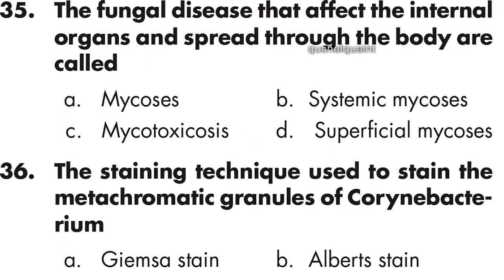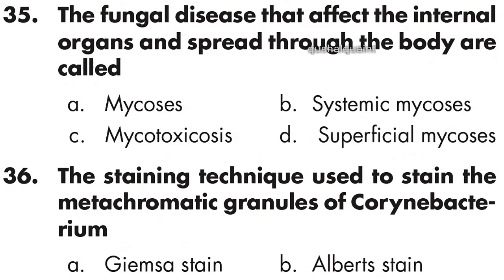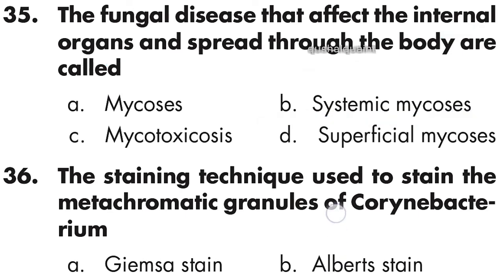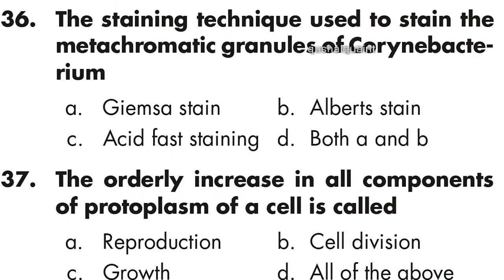Question 35: Fungal diseases that affect the internal organs and spread through the body are called systemic mycosis — option B is correct. Question 36: The staining technique used to stain the metachromatic granules of Corynebacterium is Albert stain — option B is correct.